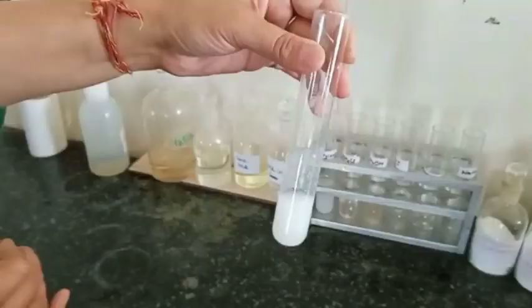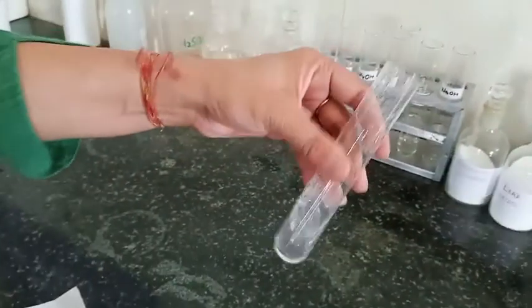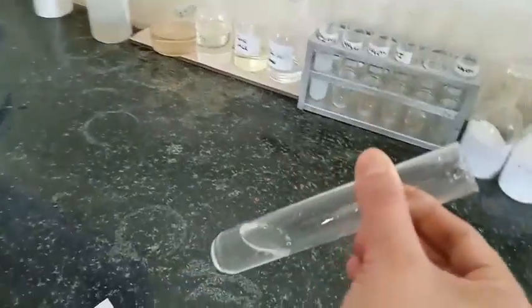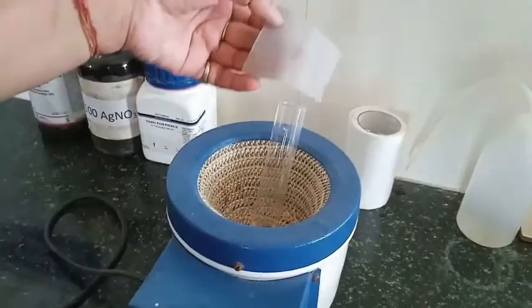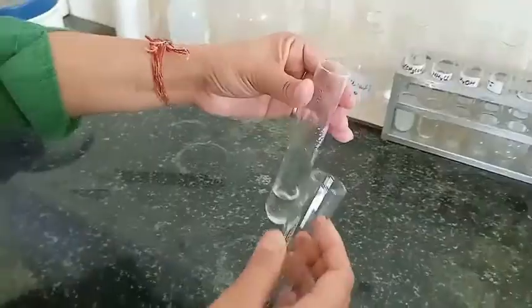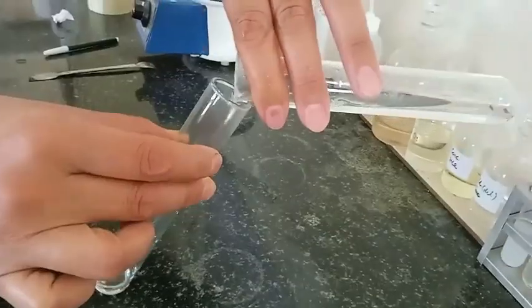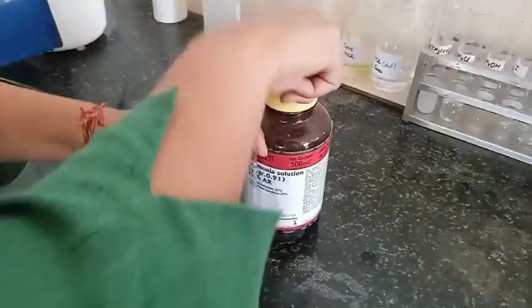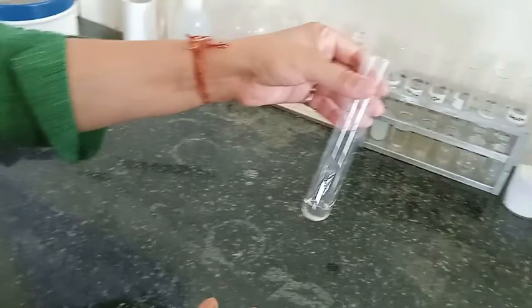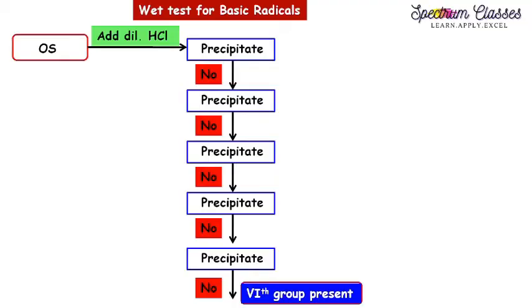Now I'm going to filter this and use the filtrate for the group 4 test. I again added H₂S gas for the test of group 4 — we again get no ppt, so group 4 is also absent. After boiling off H₂S, no black ppt. We then add ammonium carbonate in the presence of ammonium chloride, and here again we are not getting any ppt — indicating absence of group 5. Now we test separately for group 6 and group 0. If you find this video helpful and interesting, please share it with your friends, like it, and subscribe to the channel. Thanks for watching.